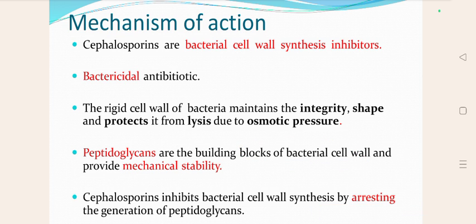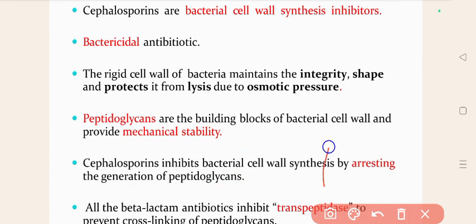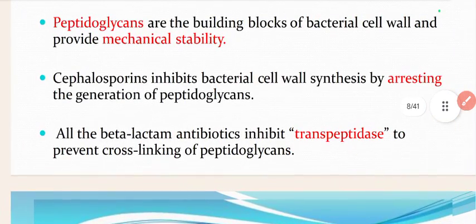The cephalosporins, by inhibiting the bacterial cell wall synthesis, arrest the synthesis or generation of peptidoglycan. All beta-lactam antibiotics inhibit the transpeptidase to prevent the cross-linking of peptidoglycan.